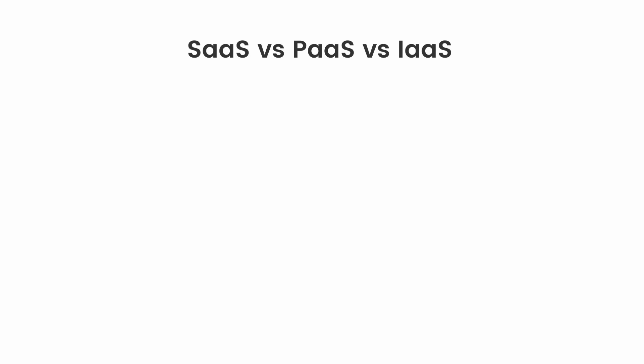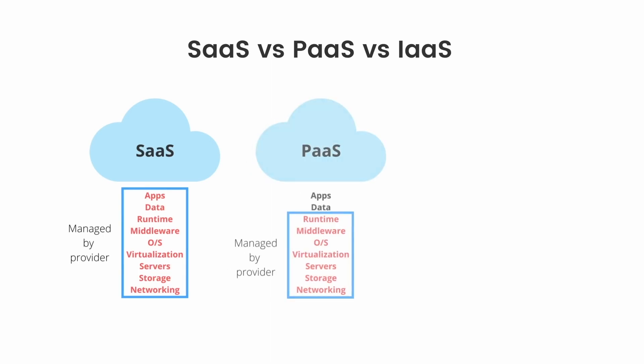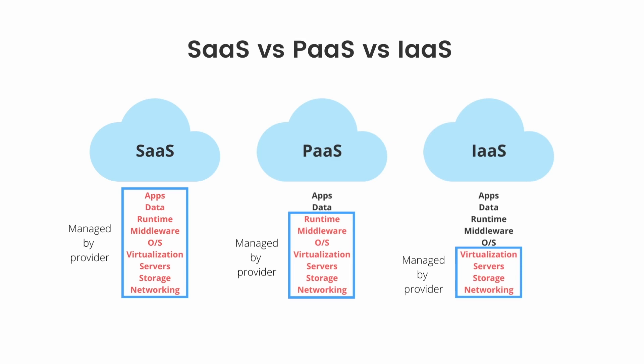With Software as a Service, everything from apps, data, virtualization, and networking is managed by the provider. With Platform as a Service, everything from runtime to networking is managed by the provider, but the applications and data are managed by the client. With Infrastructure as a Service, the only things managed by the provider are virtualization, servers, storage, and networking.